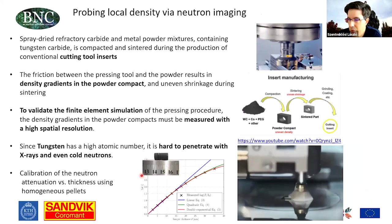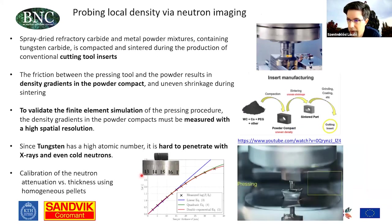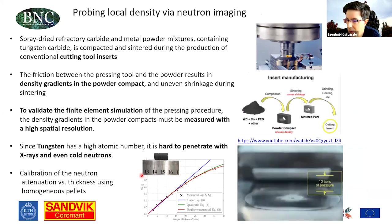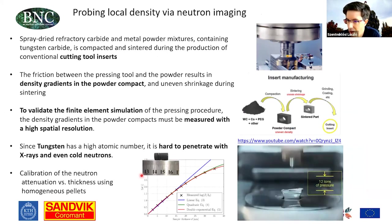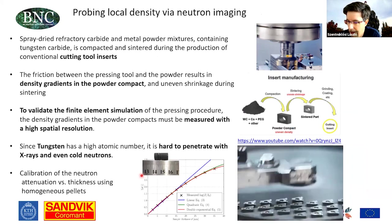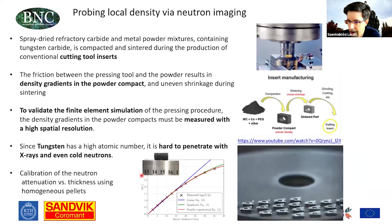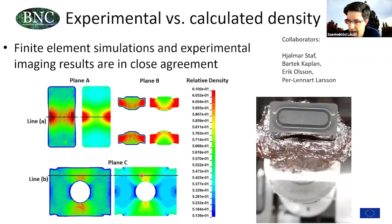Another application is investigating high-Z elements like tungsten. This is a cutting tool made of tungsten — even though it is not very large, x-rays cannot penetrate through it. With neutron imaging, we were able to measure the spatial distribution of density and compare it with numerical calculations, obtaining very good agreement with the numerical simulation.